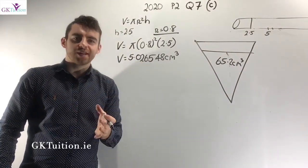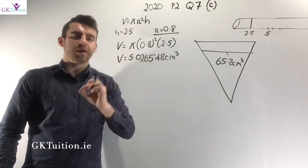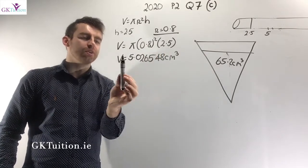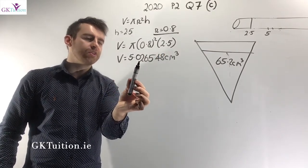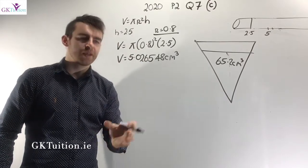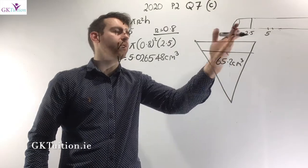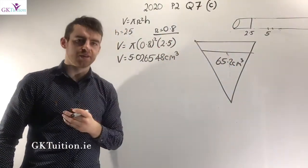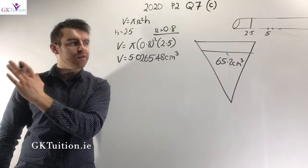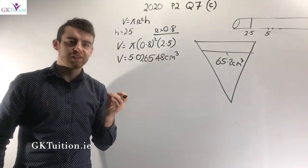Page 10 in the maths tables gives the volume of a cylinder as π r² h. With radius 0.8 and height 2.5, plugging into the calculator gives 5.026548 cm cubed. This is the amount of water contained in 2.5 cm of the cylinder — in other words, the volume of water flowing into the cone each second.